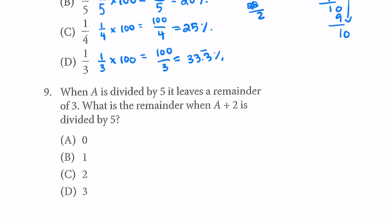Question 9: when a is divided by 5, it leaves a remainder of 3. What is the remainder when a + 2 is divided by 5? I like to assign values to variables when I can. What number divided by 5 leaves a remainder of 3? It has to be a multiple of 5 plus 3. For example, 20 divided by 5 equals 4 with no remainder, so 20 + 3 = 23. And 23 divided by 5 equals 4 remainder 3. So a = 23. Then a + 2 = 25. 25 divided by 5 equals 5 with no remainder — it's 0. So our answer is A.